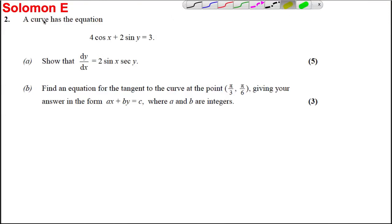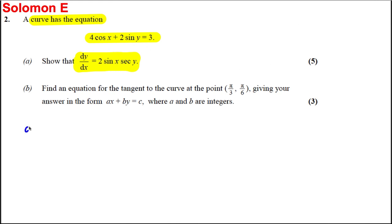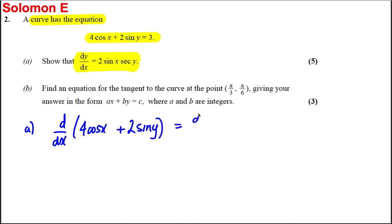Here's another implicit differentiation question. This time we have a curve with trigonometric x and y's in it, and we're asked to show that dy/dx is a given expression. So let's differentiate both sides as always with respect to x: d/dx of 4cos(x) + 2sin(y) is going to be equal to d/dx of 3.